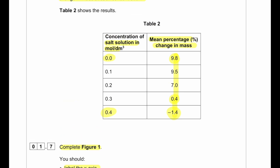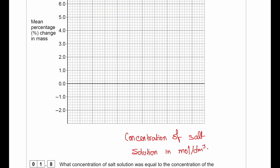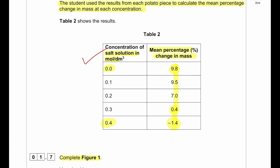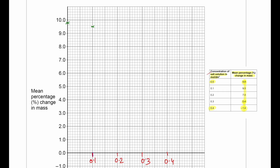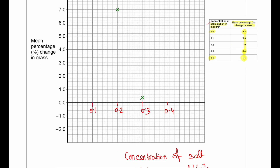The x-axis is always the independent variable, so it will be the concentration of salt solution in mol per dm³, starting from 0, then 0.1, 0.2, 0.3, and 0.4. From the table: at 0.0 the mean percentage change is 9.8; at 0.1 it is 9.5; at 0.2 it is 7.0; at 0.3 it is 0.4; and at 0.4 it is negative 1.4. We then draw a smooth line of best fit through these points.